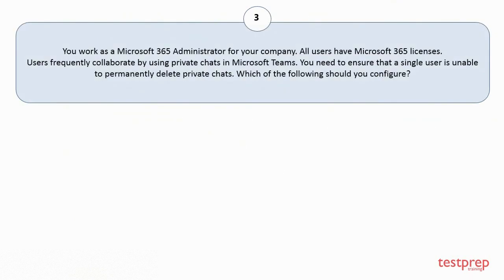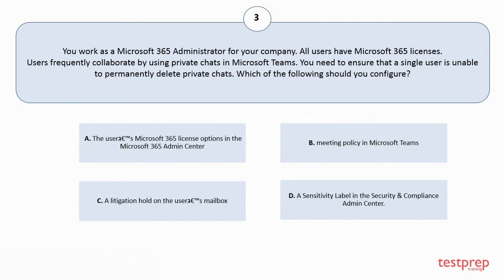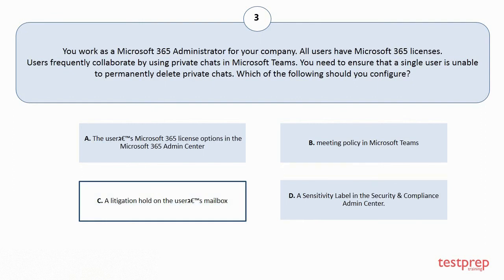Question 3. You work as a Microsoft 365 Administrator for your company. All users have Microsoft 365 licenses. Users frequently collaborate by using private chats in Microsoft Teams. You need to ensure that a single user is unable to permanently delete private chats. Which of the following should you configure? Your options are: A. The Microsoft 365 license options in the Microsoft 365 Admin Center. B. A meeting policy in Microsoft Teams. C. A litigation hold on the mailbox. D. A sensitivity label in the Security and Compliance Admin Center. The correct answer is Option C.